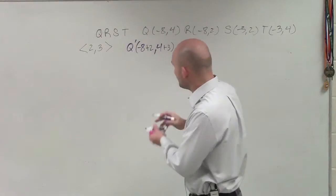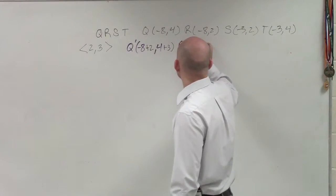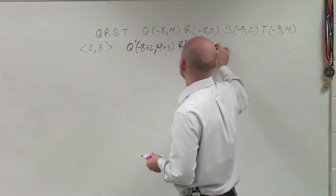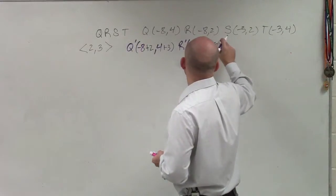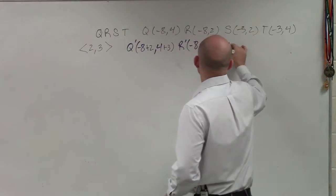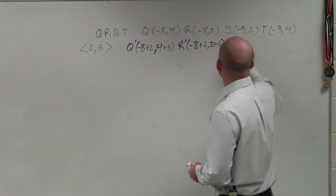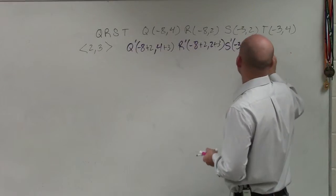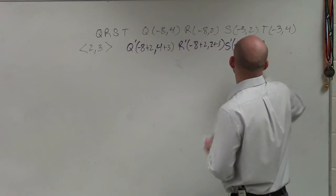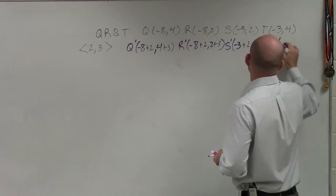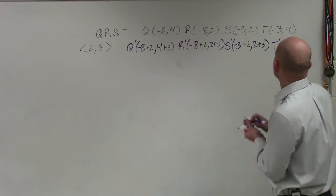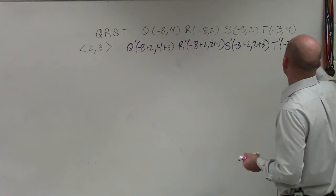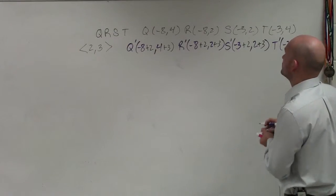So now I have R prime, which is going to be negative 8 plus 2, and then I have 2 plus 3. Then I have S prime, which is now negative 3 plus 2 comma 2 plus 3. Then I have T prime, which is now going to become negative 3 plus 2 comma 4 plus 3.